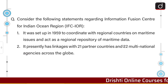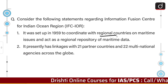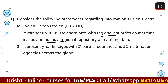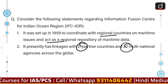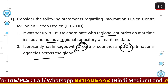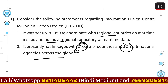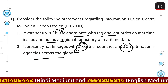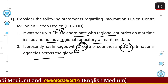Consider the following statements regarding the Information Fusion Centre for Indian Ocean Region. Statement one: it was set up in 1959 to coordinate with regional countries on maritime issues and act as a regional repository of maritime data. Statement two: presently it has linkages with 21 partner countries and 22 multinational agencies across the globe. The first statement is incorrect because it was set up in 2018, not 1959.